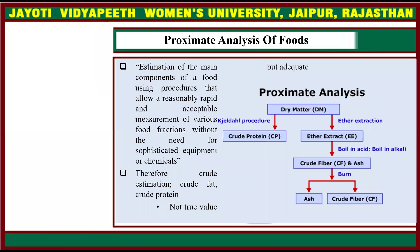Proximate analysis of foods involves estimation of the main components of a food using procedures that allow a reasonably rapid and acceptable measurement of various food fractions without the need for sophisticated equipment or chemicals. Therefore, crude estimation, crude fat, and crude protein are not true values but they are almost adequate.